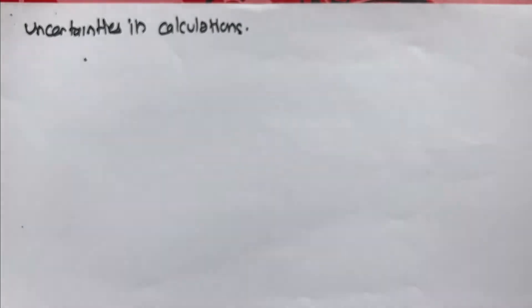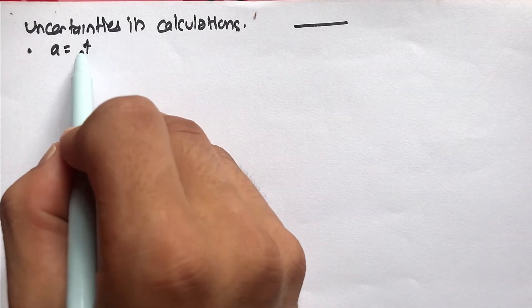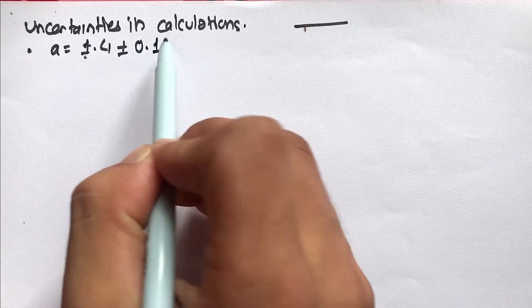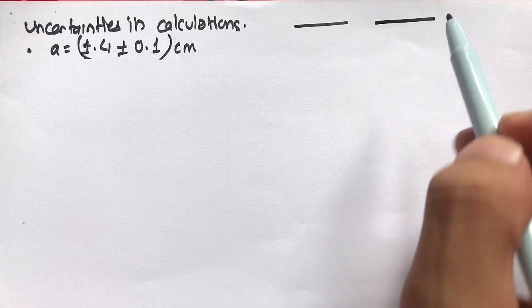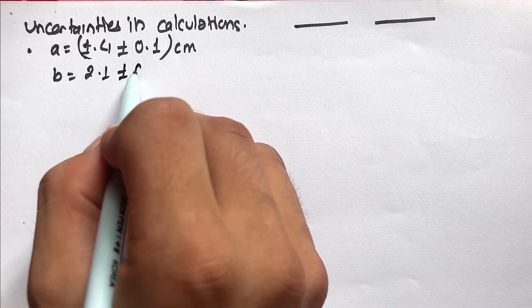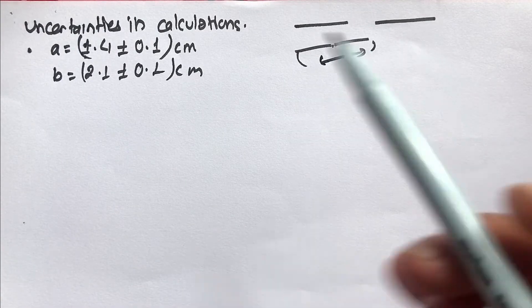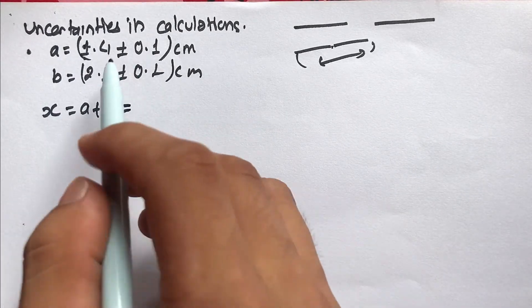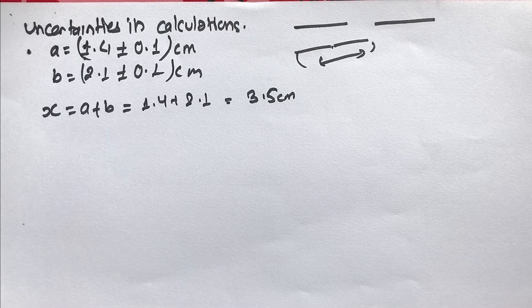Now let's talk about uncertainty in calculation. Suppose you measured the length of line A as 1.4 plus or minus 0.1 cm, and line B as 2.1 plus or minus 0.1 cm. If you want to combine these two lines and find the total length, x equals A plus B, so it would be 1.4 plus 2.1, which gives 3.5 cm. But what is the uncertainty?